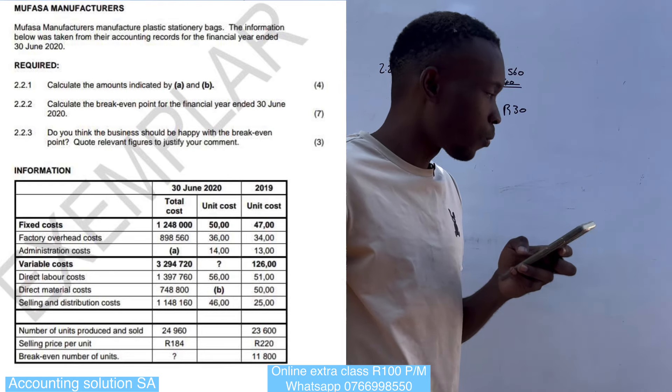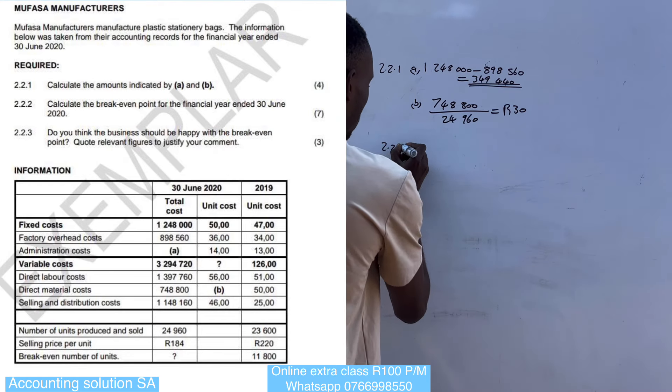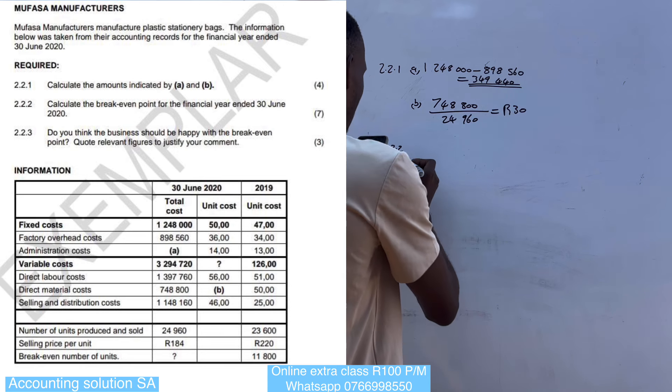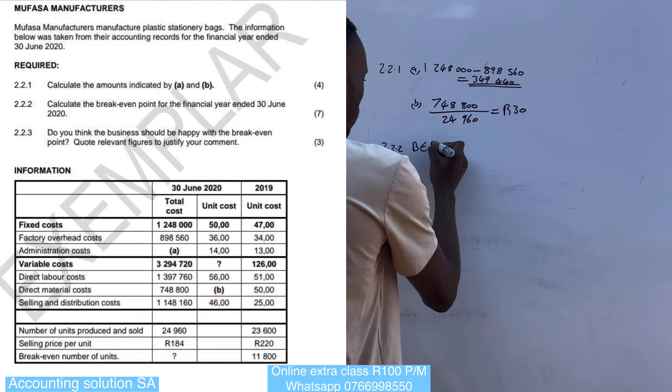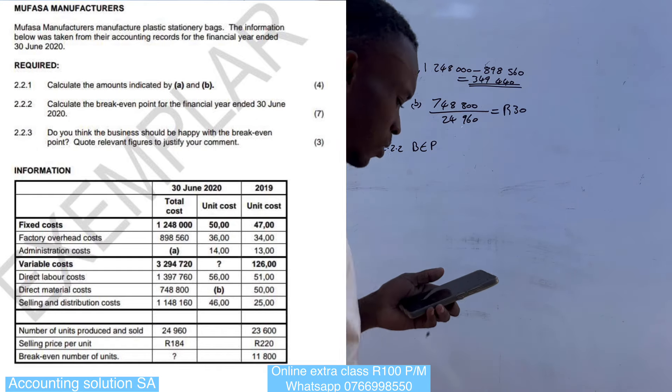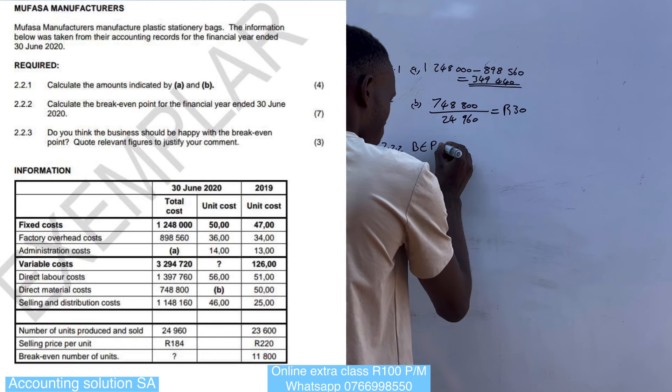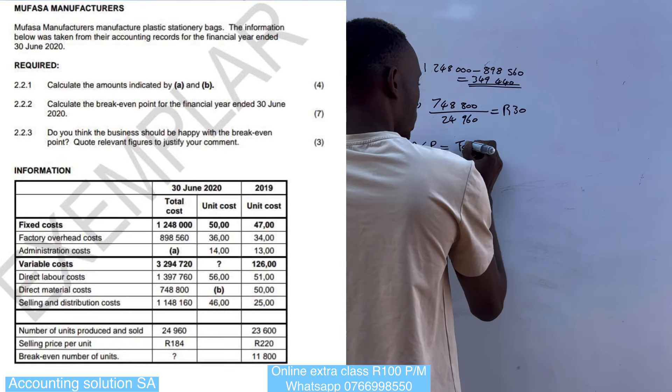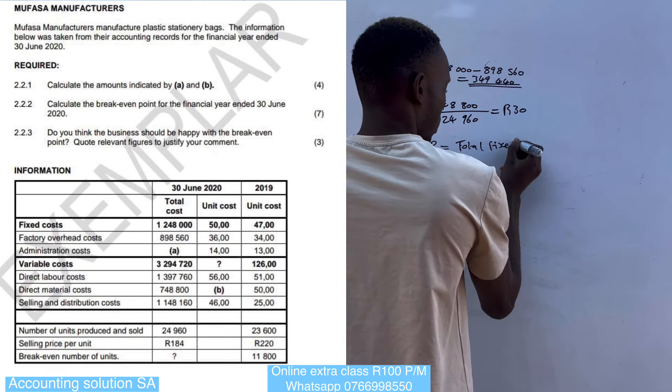Question 2.2.2 asks us to calculate the break-even point — it's worth 7 marks. You must know the formula first: break-even point equals total fixed cost divided by selling price per unit minus variable cost per unit. Our total fixed cost is R1 248 000.